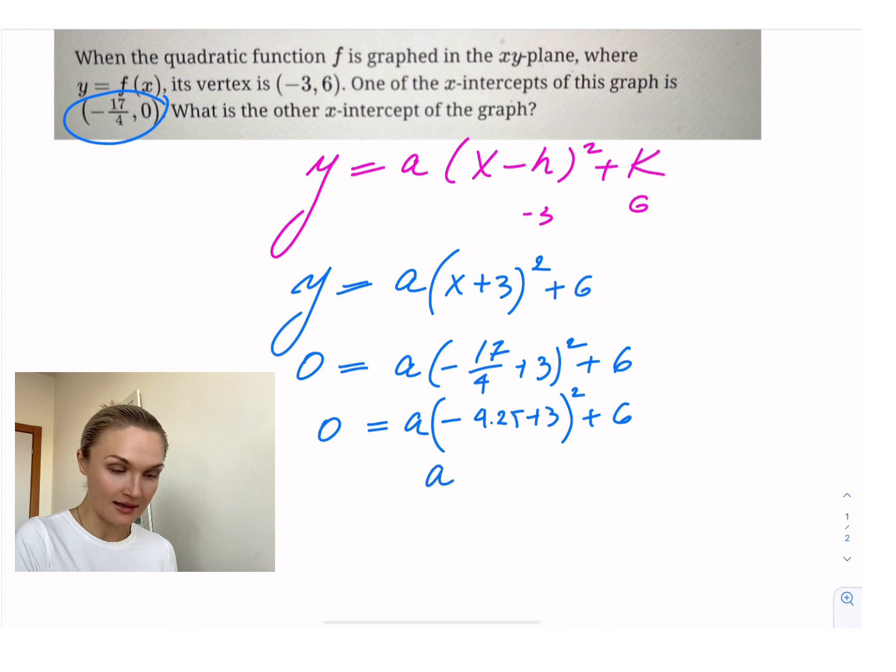Then we get a times 1.5625 is equal to negative six. Then we divide by this on both sides, and we get that a is equal to negative 3.84.